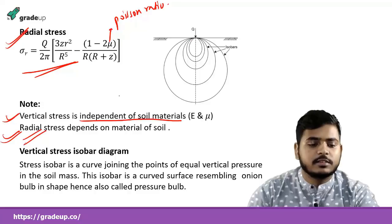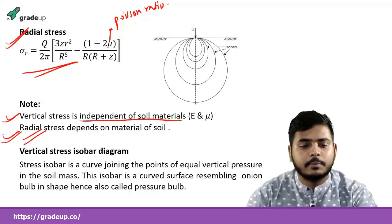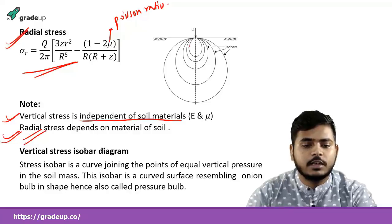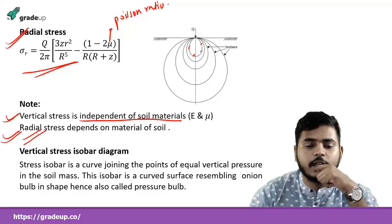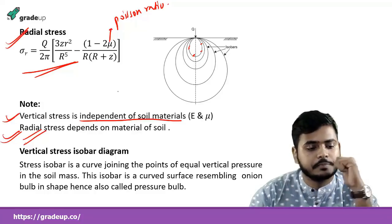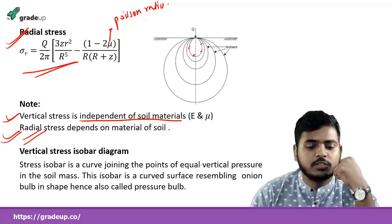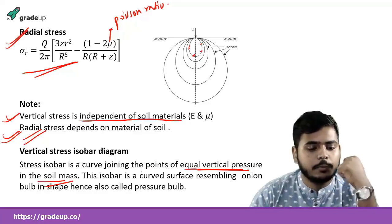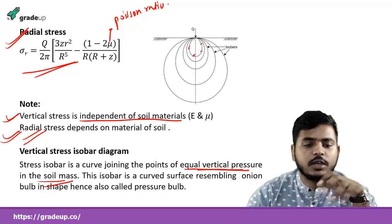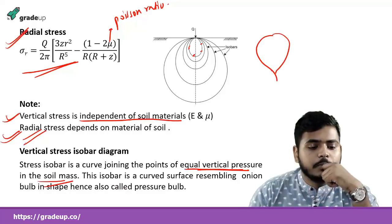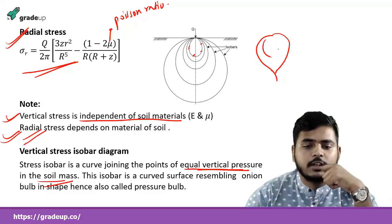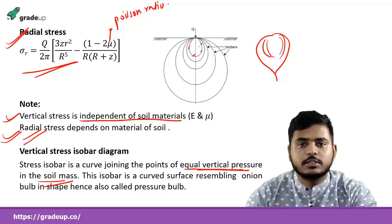Vertical stress can be shown by an isobar diagram. Isobars are curves that join points of equal vertical pressure — the stress depends on r/z, so points at different r and z can have the same pressure. A stress isobar is a curved surface resembling the shape of an onion, which is why it is also known as a pressure bulb.